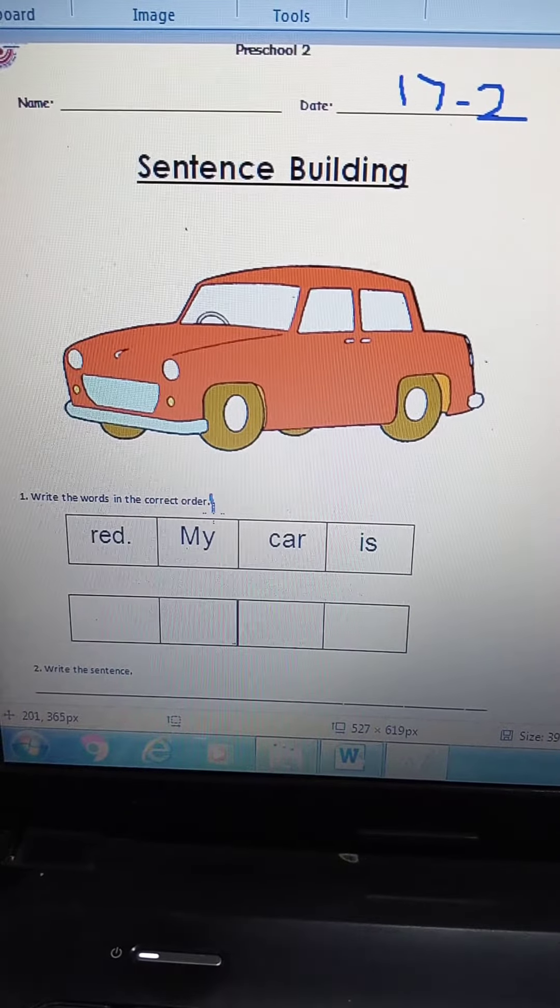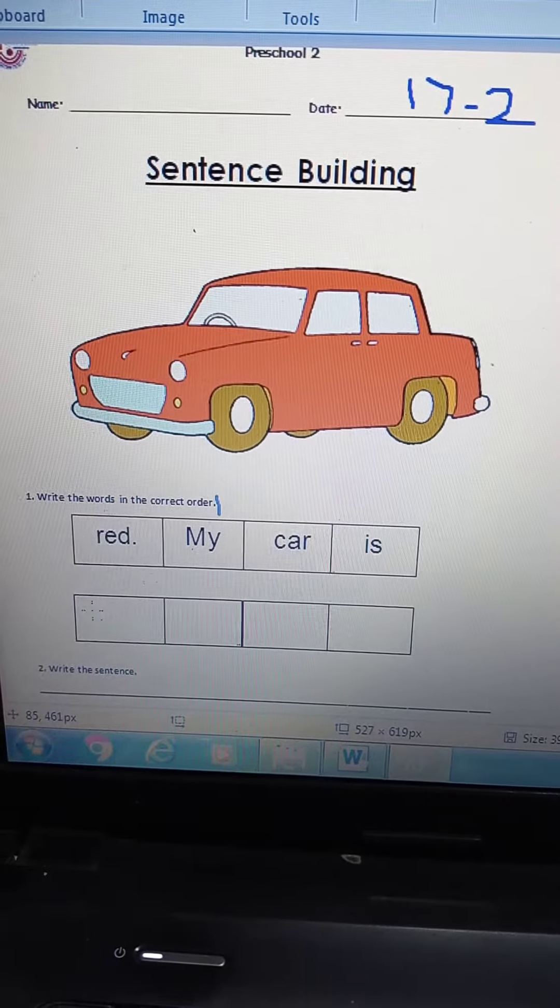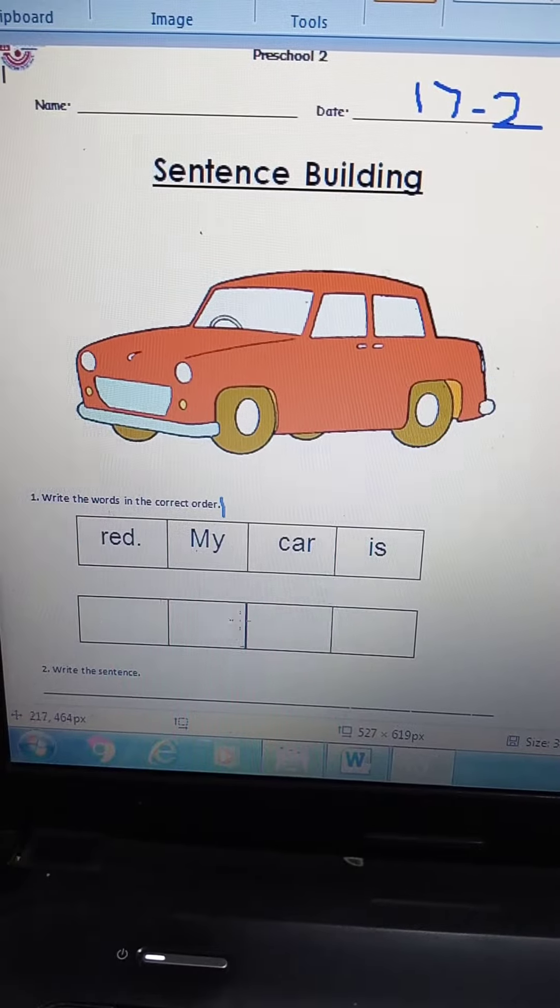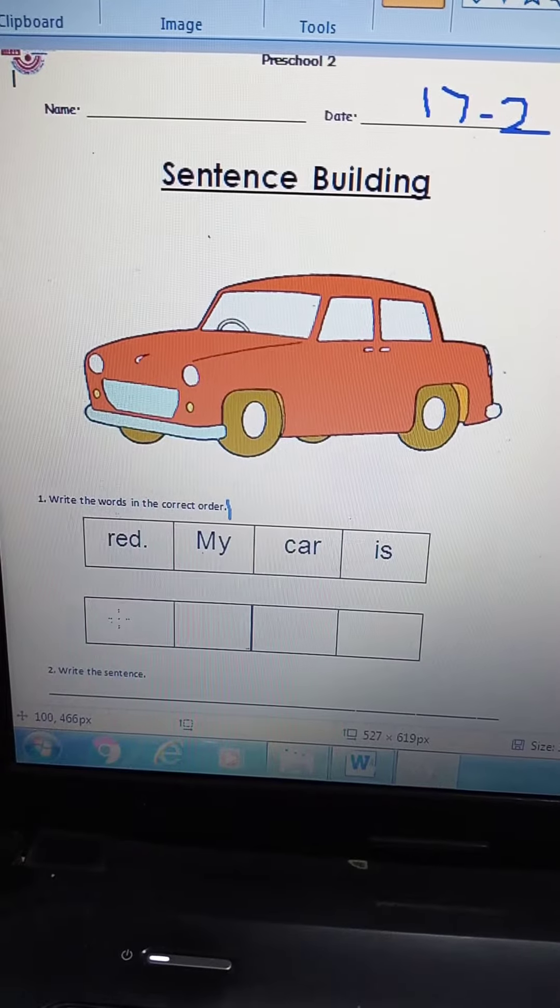We said that number one is always what? The first one. And number four, how many boxes do we have? One, two, three, four. The first word in the sentence is with a capital letter.